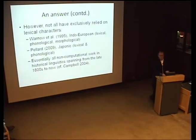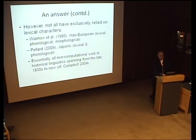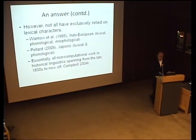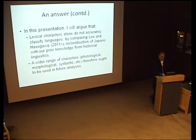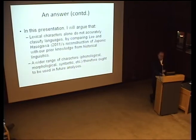Not all work has looked exclusively at lexical characters. Warner et al. 1995 and several subsequent papers have looked at Indo-European languages using lexical, phonological, and morphological characters. Pillard 2009 looked at Japonic using both lexical and phonological characters. Essentially all non-computational work in historical linguistics classifying languages into groups has been entirely holistic and not relying simply on lexical items. In this presentation I'm going to argue that lexical characters alone do not accurately classify languages, by comparing Lee and Hasegawa 2011's reconstruction of Japonic with our prior knowledge from general historical linguistics, and that we ought to use a wider range of characters — phonological, morphological, and syntactic — in future analyses.